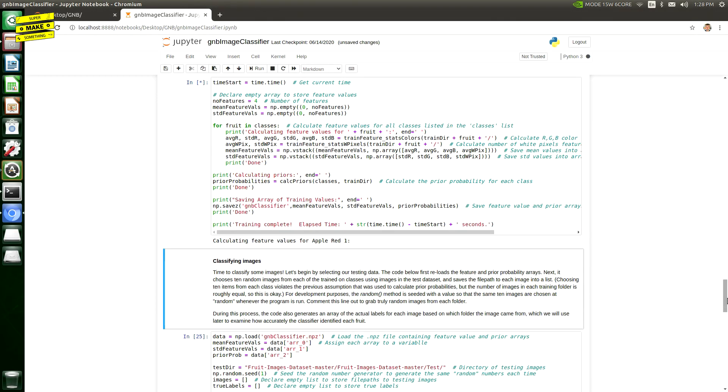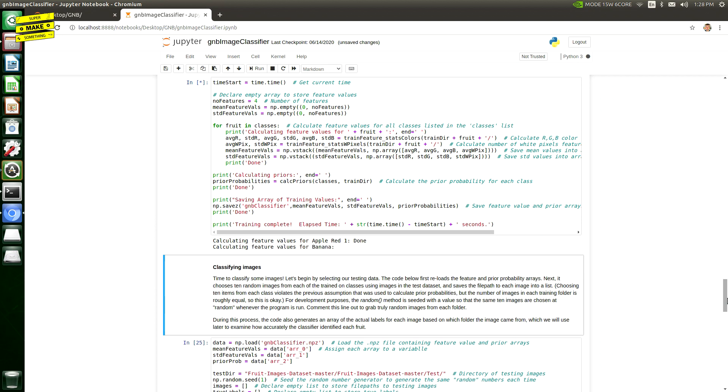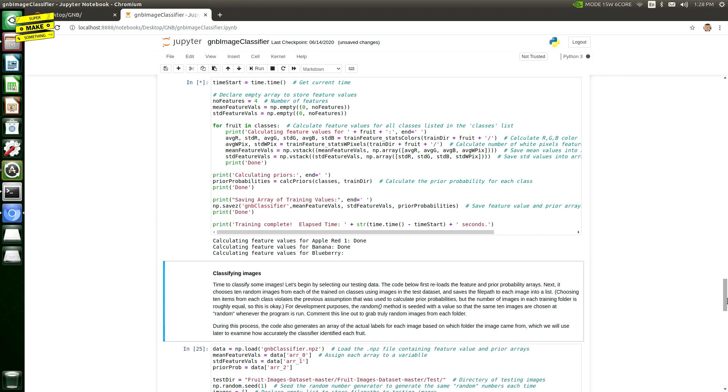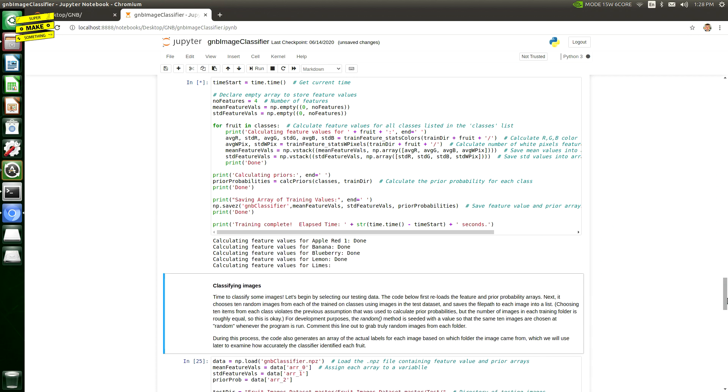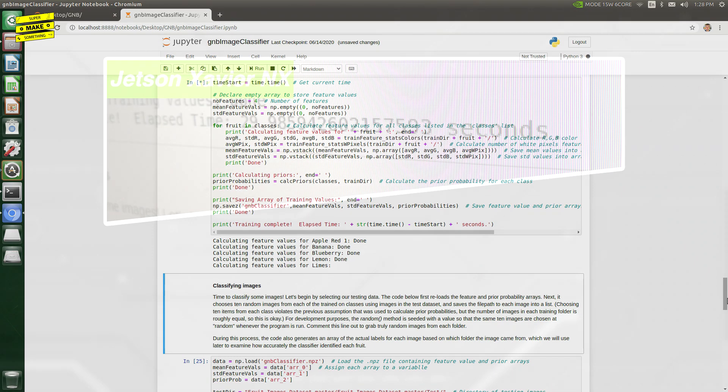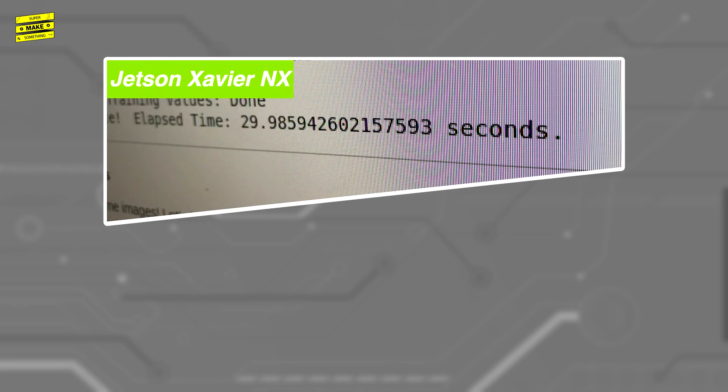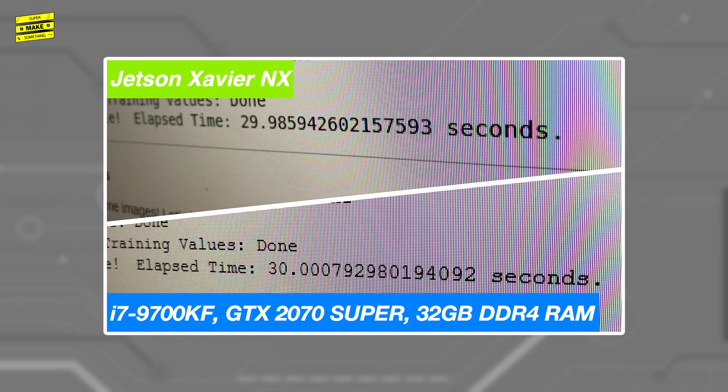The classifier was trained on approximately 475 100x100 pixel images from each of the five classes, and was able to complete all of the training, including feature extraction, in 29.99 seconds. For comparison, my desktop, which contains an Intel i7-9700KF, a GeForce RTX 2070 Super, and 32GB of DDR4 RAM completed the training in 30.00 seconds, essentially the same speed.